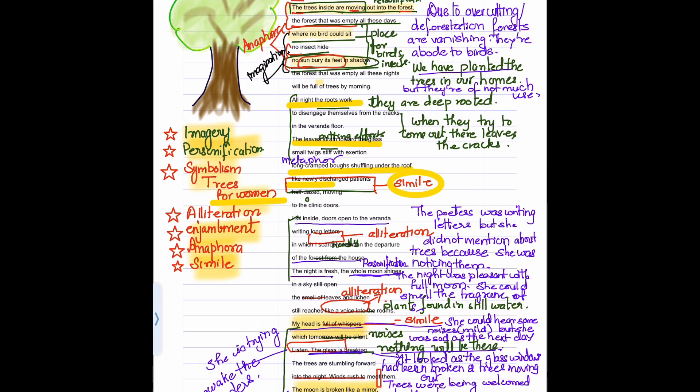Due to over cutting, deforestation, the forests are now vanishing. So that is what it says, the forest that was empty all these days. So the trees are coming out. The forest is empty. But the forest is the place where the birds make their nests.